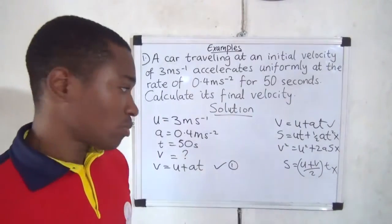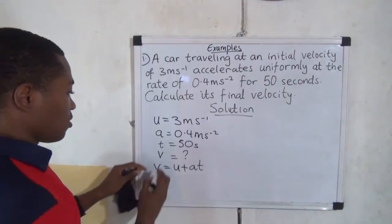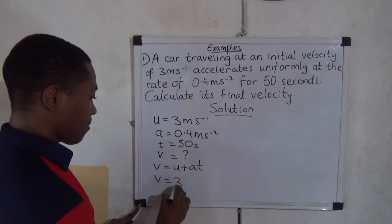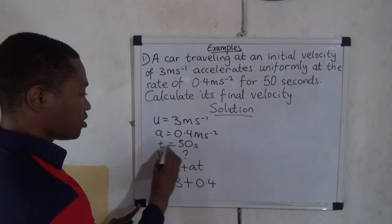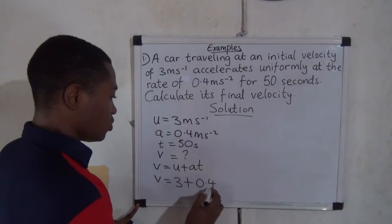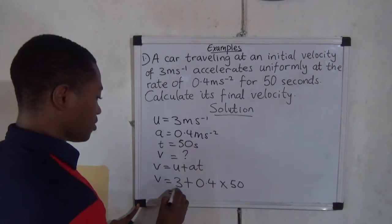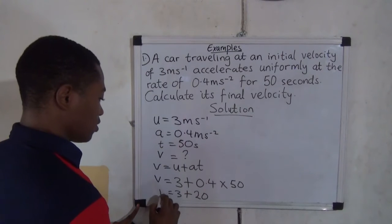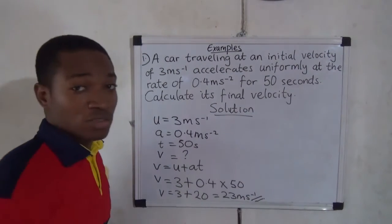We use the equation V = U + AT. V is unknown. V equals U, which is 3, plus A multiplied by T: 0.4 multiplied by 50, which is 20. So V equals 3 plus 20, which equals 23 meters per second. That is our answer.